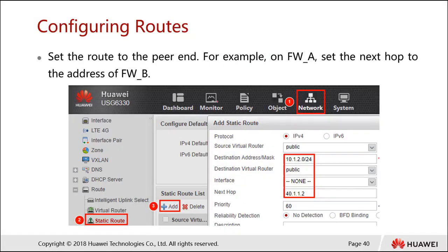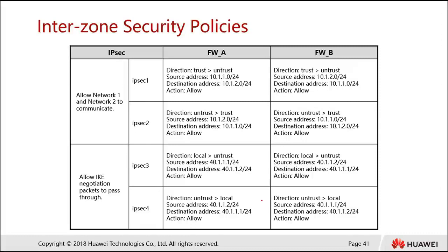For the first step on Firewall A, go to Network, then Static Route, add a new static route with destination 10.1.2.0, and set the next hop to 40.1.1.2 (the peer's public IP). For the inter-zone security policy, configure four policies: IPsec1, IPsec2, IPsec3, and IPsec4. IPsec1 and IPsec2 are configured on Firewall A, and their counterparts on Firewall B.